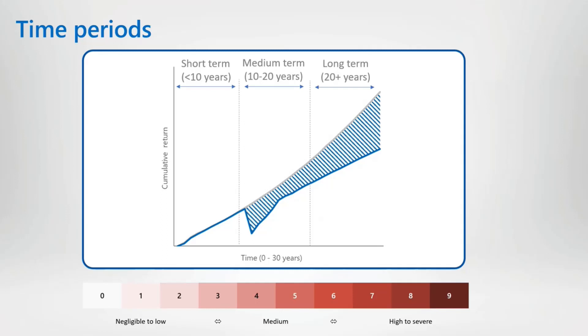Scenario impacts are then scored on a scale from 0 to 9, with 0 being a negligible impact and 9 being a severe impact.